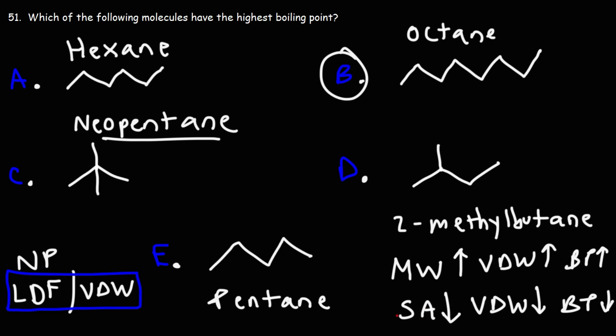Now, for these types of questions, if you want to find the structure with the highest boiling point, you're looking for the alkane with the highest molecular weight and with the least amount of branching, or the alkane that is straight chain with the highest molecular weight, and that's going to be octane.